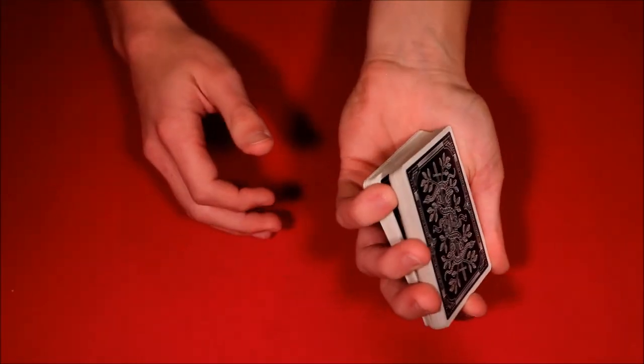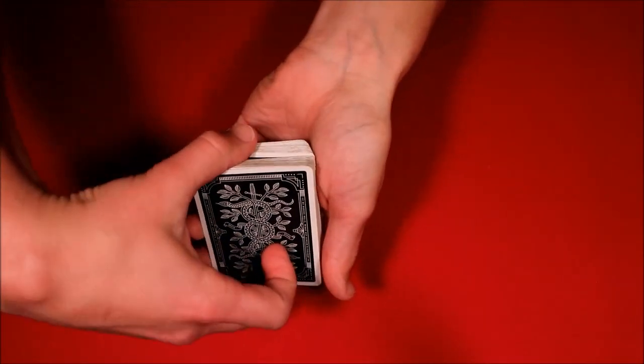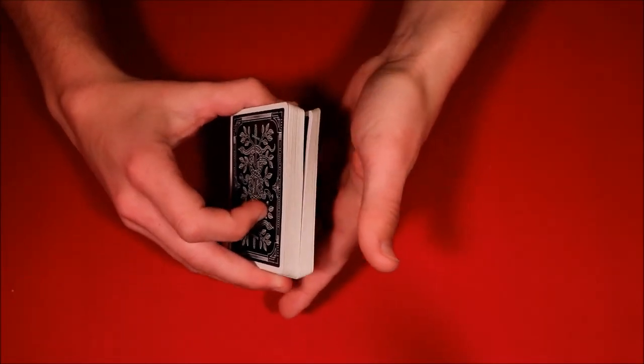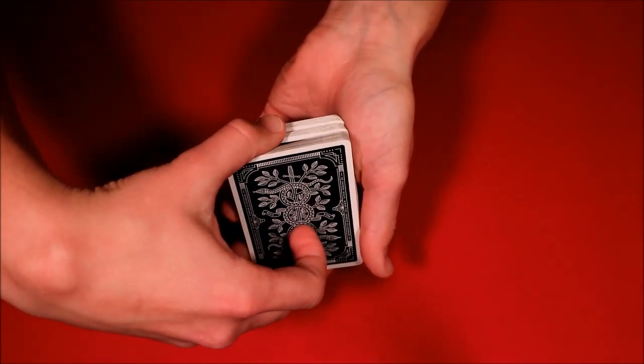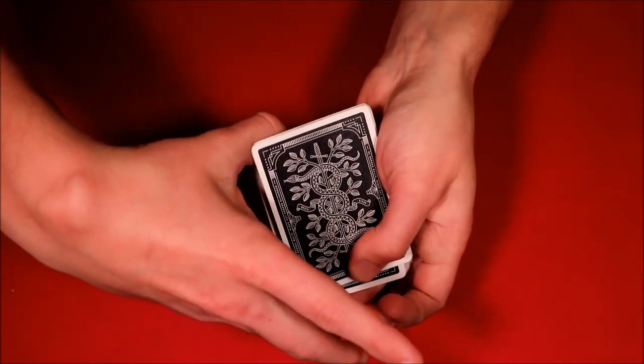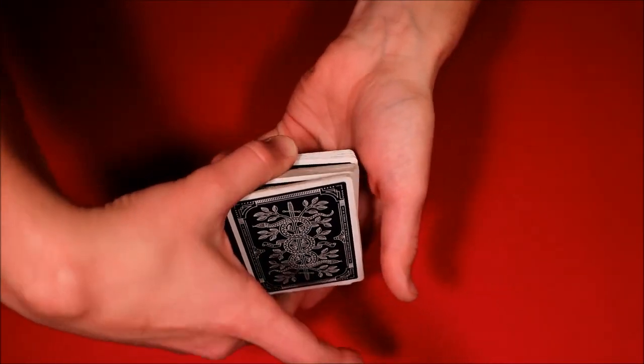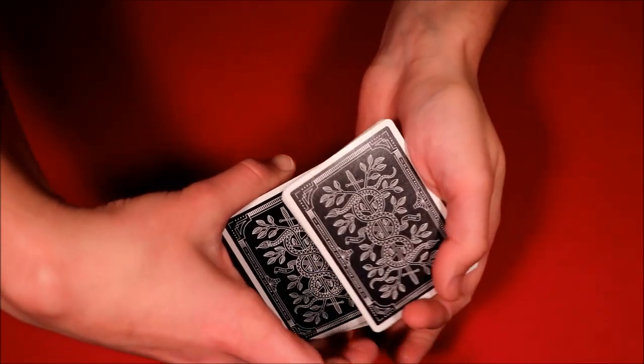From here you can just cut the deck if you want to, or you could do a double undercut which looks like this: you're taking about half the deck using your pinky right here, cutting half the bottom of the deck away like this, moving that to the top, and then cutting the rest of the cards as well. That is going to bring the spectator's card to the top.